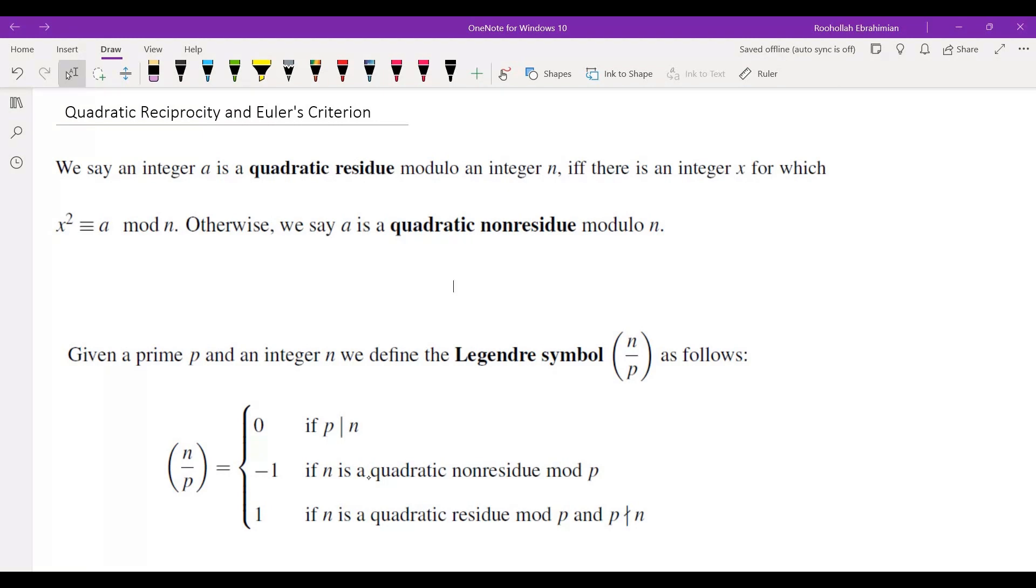So first, what is a quadratic residue? We say an integer A is a quadratic residue mod n if there is an integer X for which X squared is congruent to A mod n.